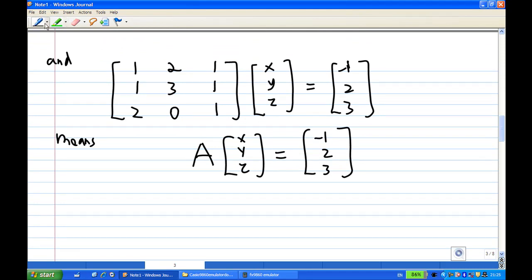Therefore, to solve this equation, we can multiply both sides on the left by A inverse. Alright, so multiply both sides on the left by A inverse if there is an A inverse.